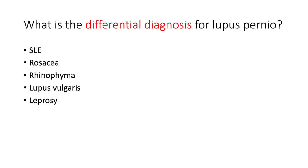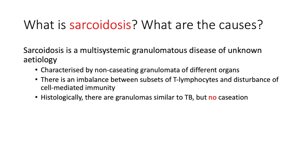That lesion looks kind of like the butterfly rash of systemic lupus erythematosus (SLE), but the classic way to differentiate them is that SLE will spare the nasal folds, whereas lupus pernio can involve it. Rosacea is also a common differential for both lupus pernio and the butterfly rash of SLE. Others include rhinophyma, lupus vulgaris, and leprosy.